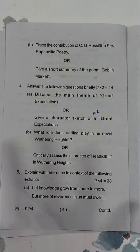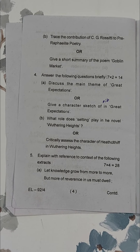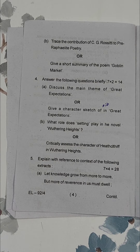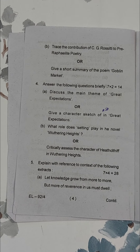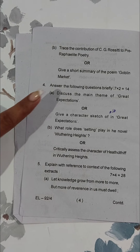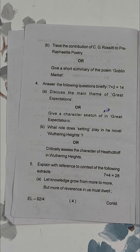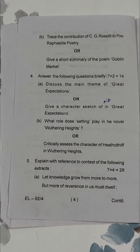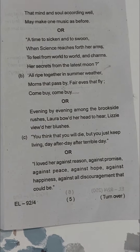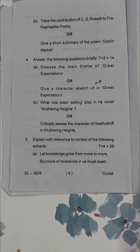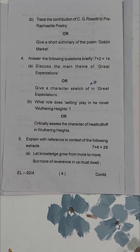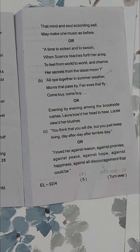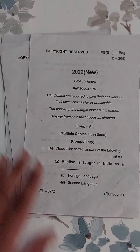In question number four, you have to answer two questions of seven marks each — one from A and one from B. The last question is question number five, which is reference to the context. You have to attempt four from A, B, C, D and these are of seven marks each. So that is it about the question papers of PGS M2.